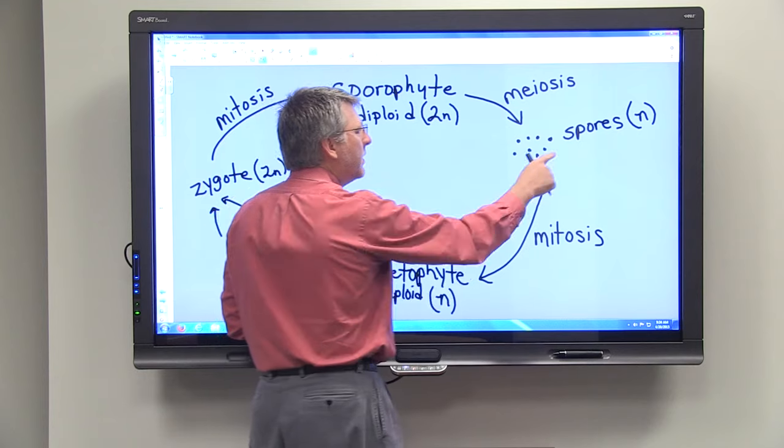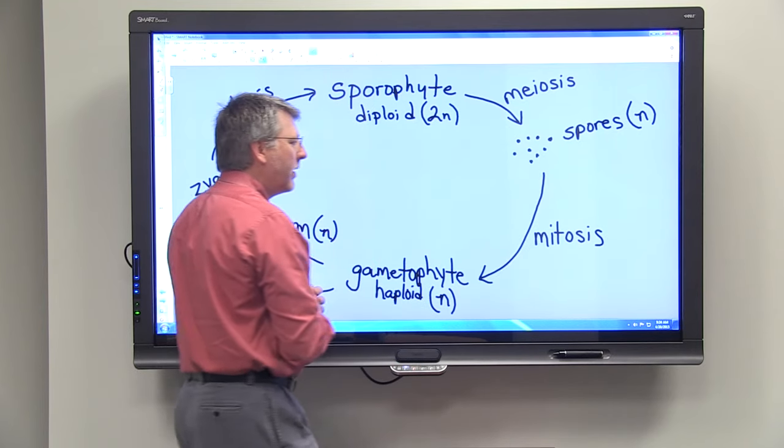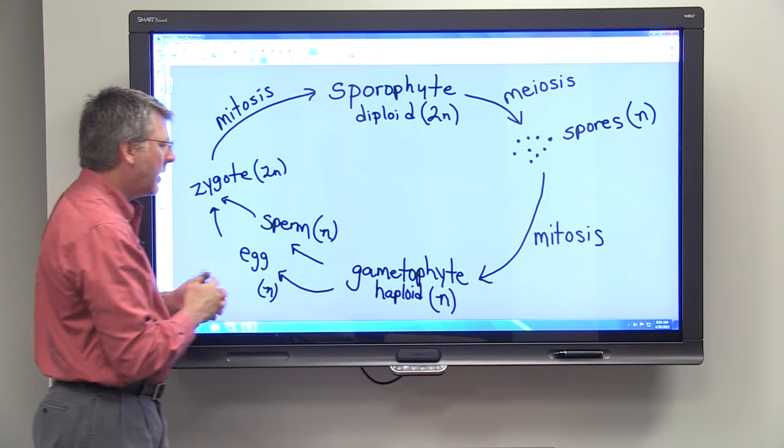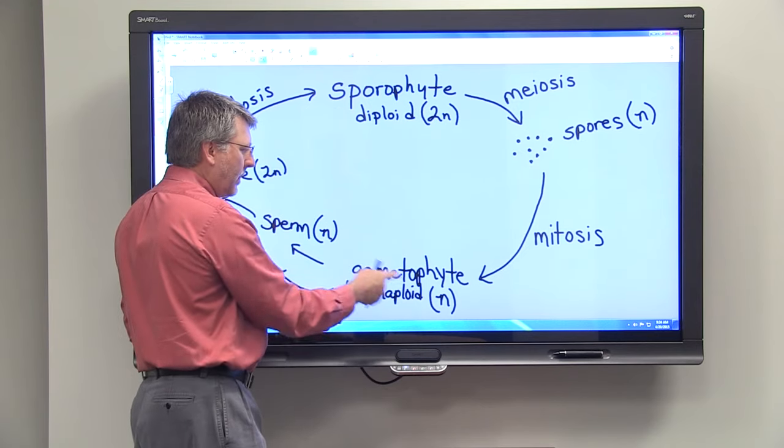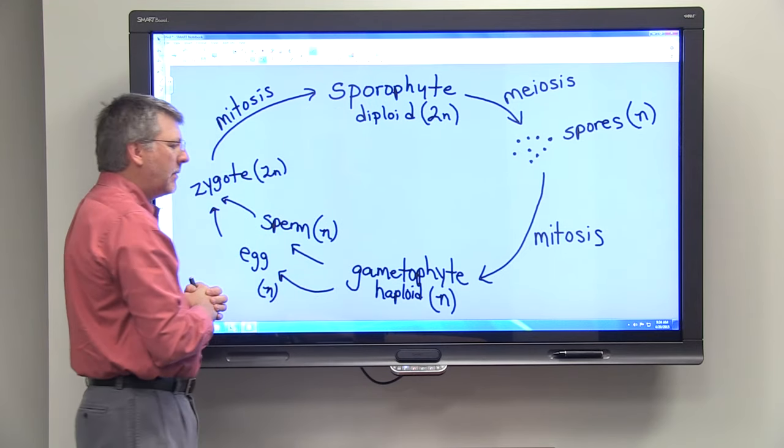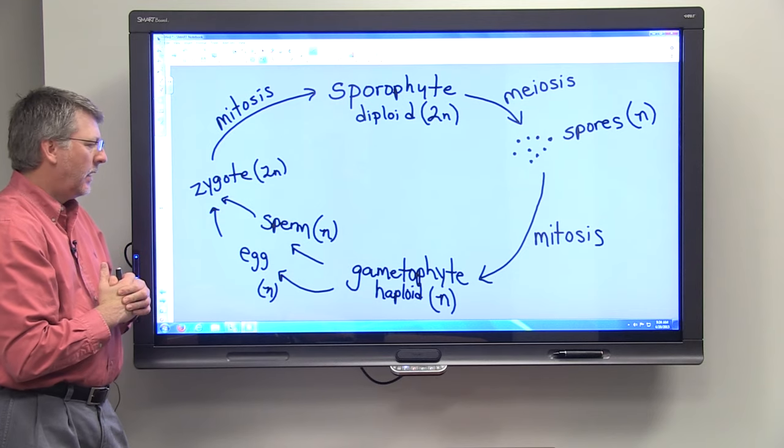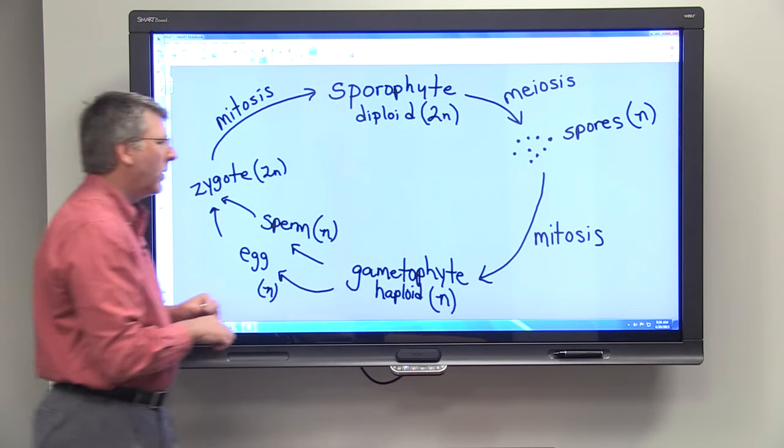And so this haploid spore will then divide by the process of mitosis. And that results in the gametophyte generation. And the gametophyte generation, of course, is haploid.